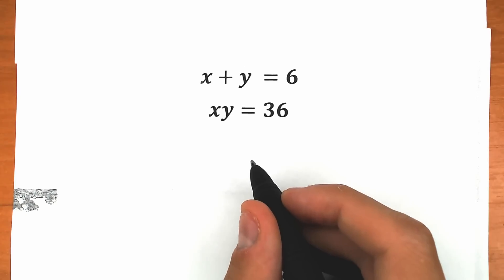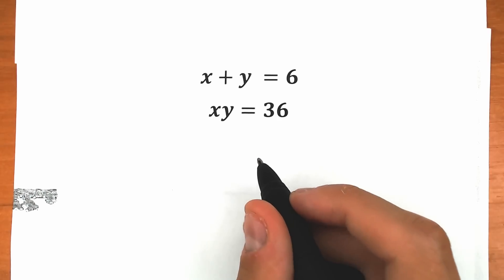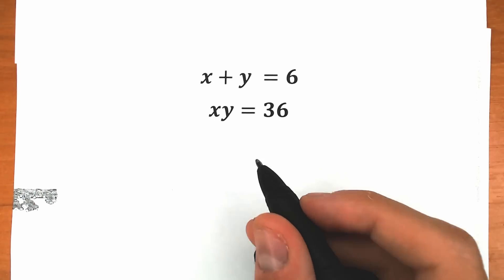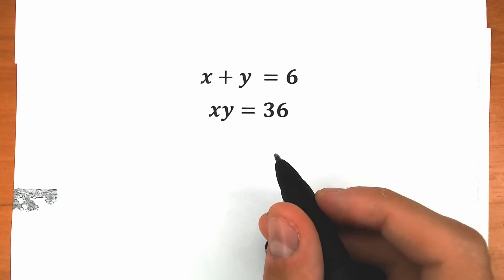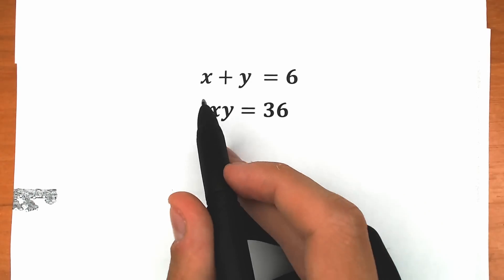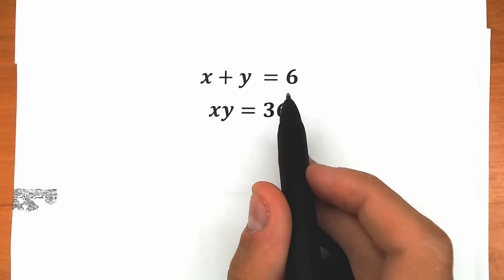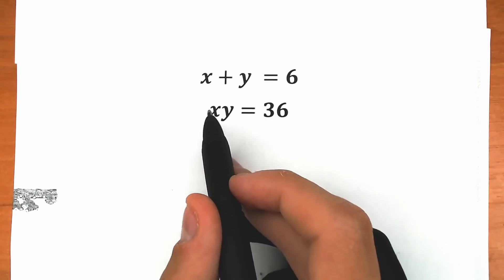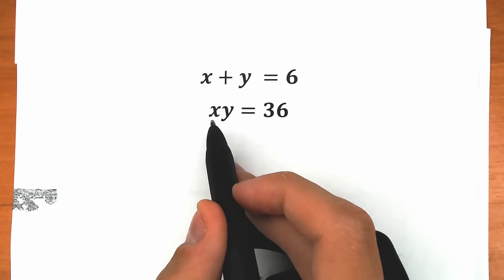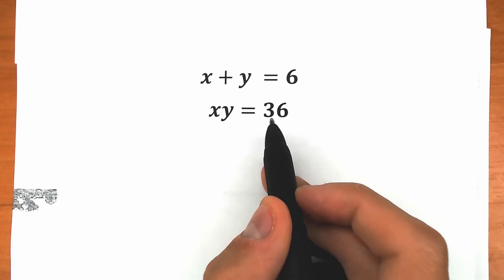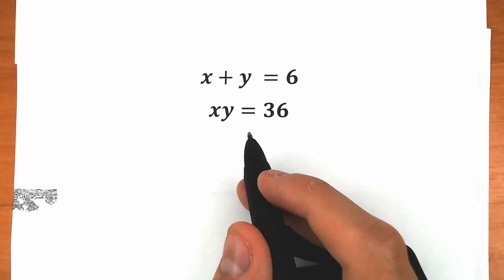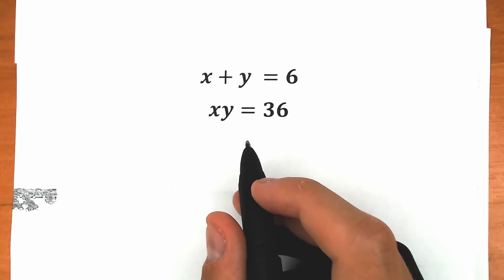Hello everyone, happy to see you here on my channel. I'm Mathematics and today we have a really interesting, relaxing challenge. We have x plus y equal to 6, and we have a product x times y equal to 36, and we need to find x and y.